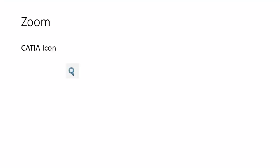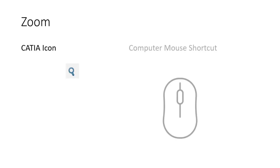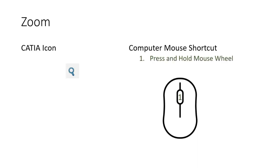The next function we're going to go over is how to zoom in. The CATIA icon looks like a magnifying glass. For the computer mouse shortcut, the first step is the same as panning — press and hold the mouse wheel down. For the second step, you want to press and release the left mouse button. So press down and hold the mouse wheel, keep that pressed down, then press and release the left mouse button.